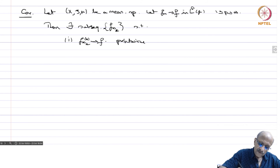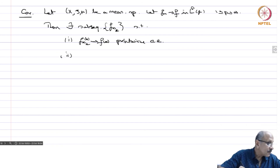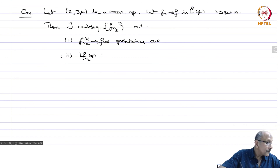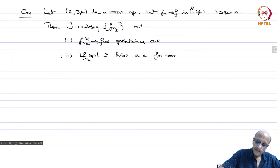Then there exists a subsequence f_{n_k} such that: (1) f_{n_k}(x) → f(x) almost everywhere (except on a set of measure 0), and (2) |f_{n_k}(x)| ≤ h(x) almost everywhere for some h ∈ Lp.